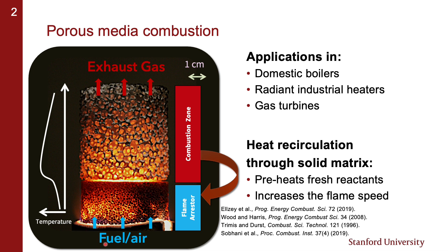In this example, you have a premix of fuel and air flowing through a flame arrester foam, burning at the interface between a flame arrester foam and a combustion foam. The particularity of porous media burners is that the heat from the products can be recirculated towards the inlet side through the solid matrix by conduction and radiation.